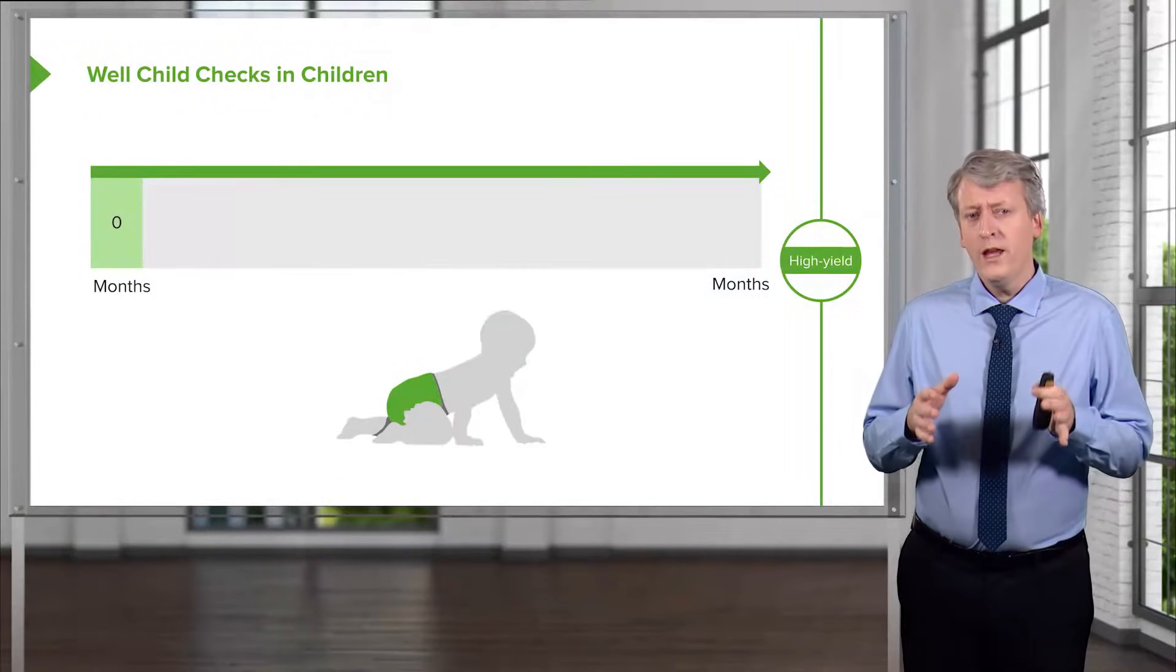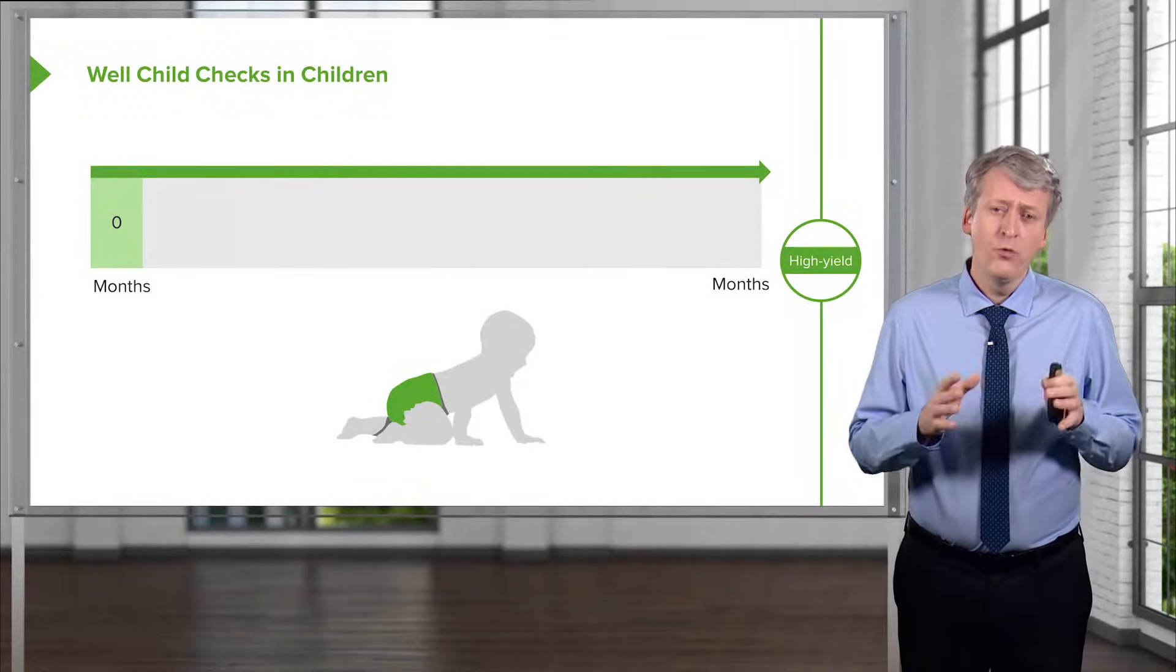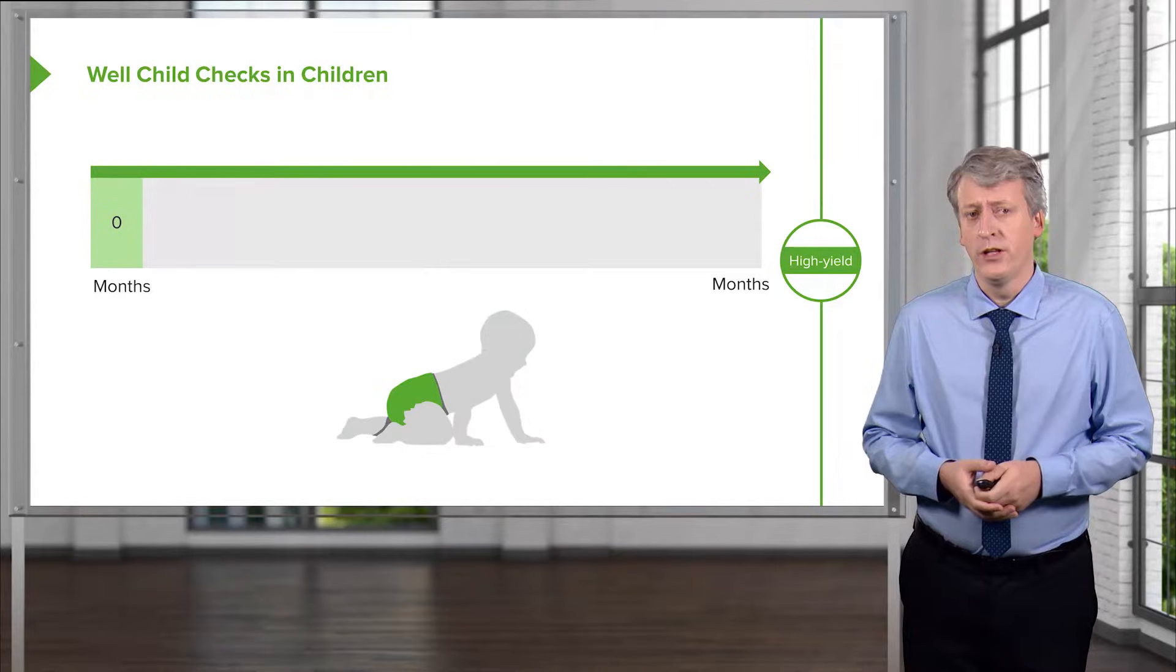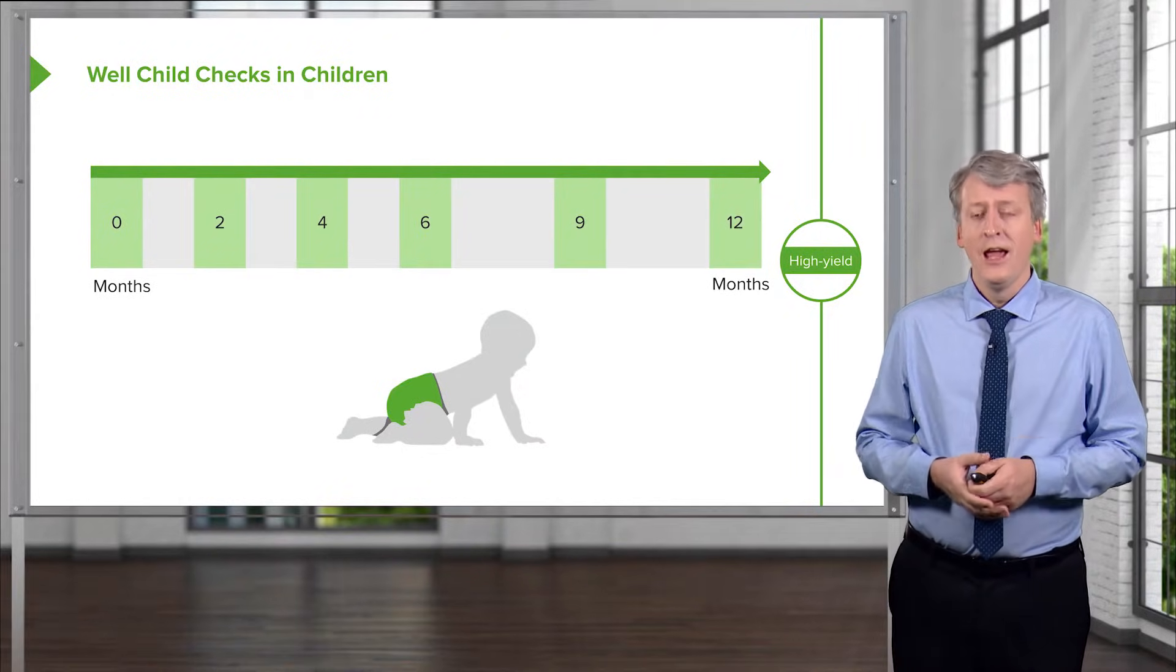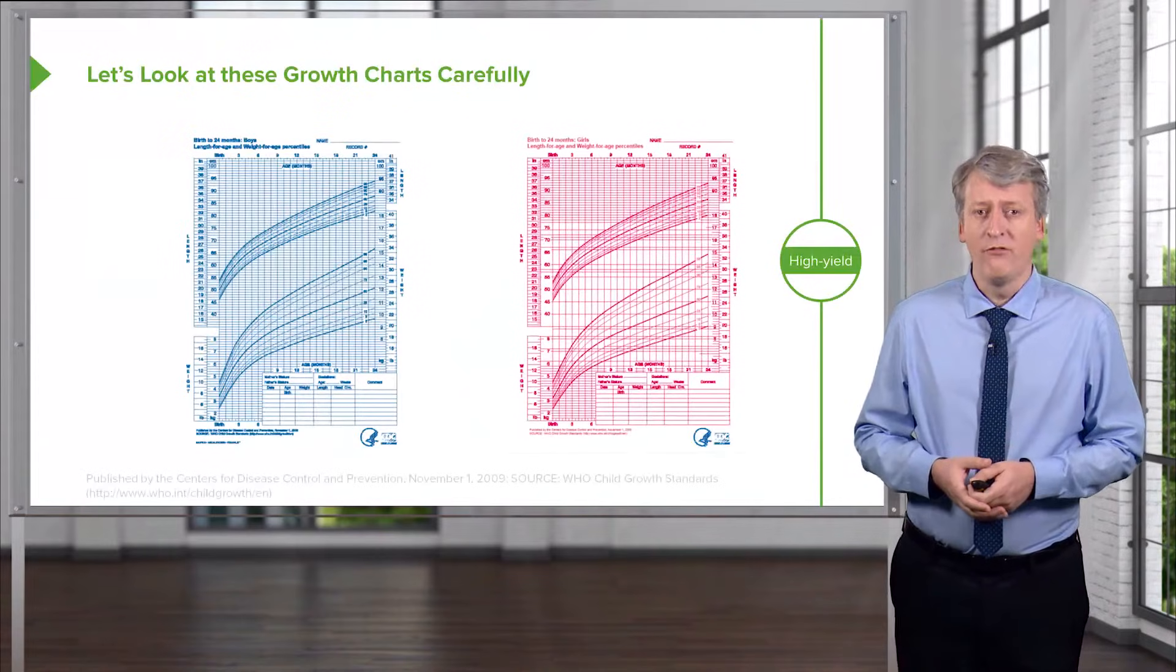As a result of primary care, we do frequent checks of children during their life at 0, 2, 4, 6, 9, and 12 months, and then on through childhood after that.